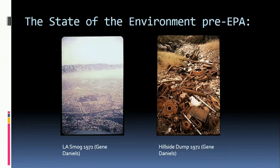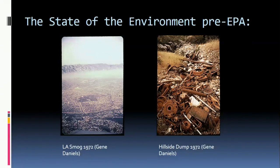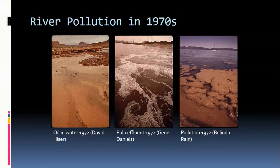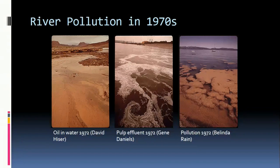Before the establishment of the EPA, pollution was very evident, from thick clouds of smog in Los Angeles, California, to nationwide garbage dumps. Pollution in rivers was also widespread. Oil spills, effluent from pulp factories, and silt pollution from agricultural and residential activities made water a stressful or unlivable habitat for organisms.